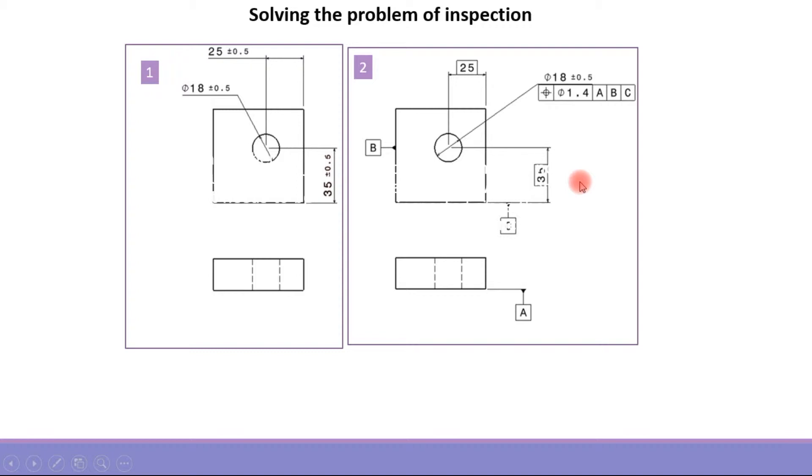Now the second drawing will show how the part should be located sequentially. So the inspector will know that the part has to be rested on A, then has to be moved towards B, then it has to be moved towards C.